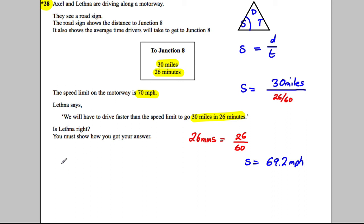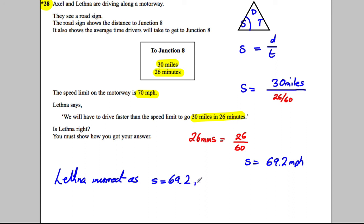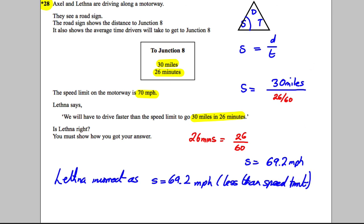So is Lefner right? No — Lefner is incorrect. The speed required is 69.2 miles per hour, which is less than the speed limit of 70 mph. And that's the question done.